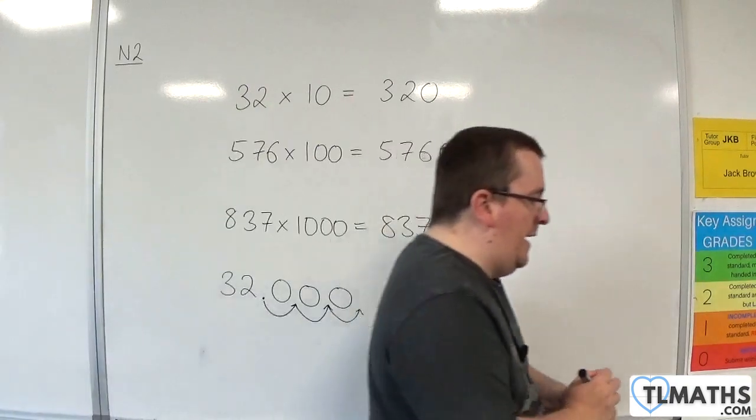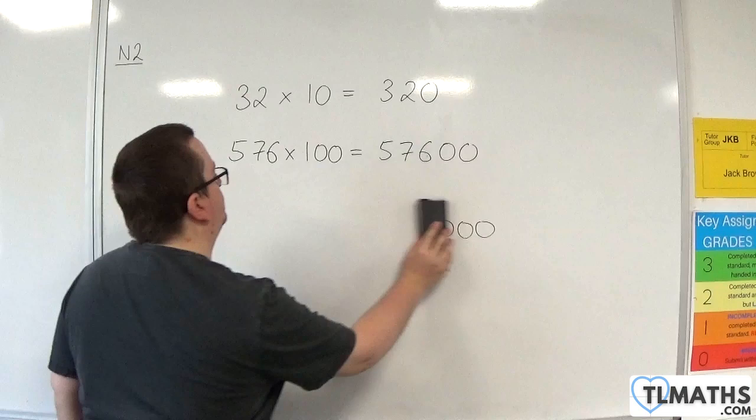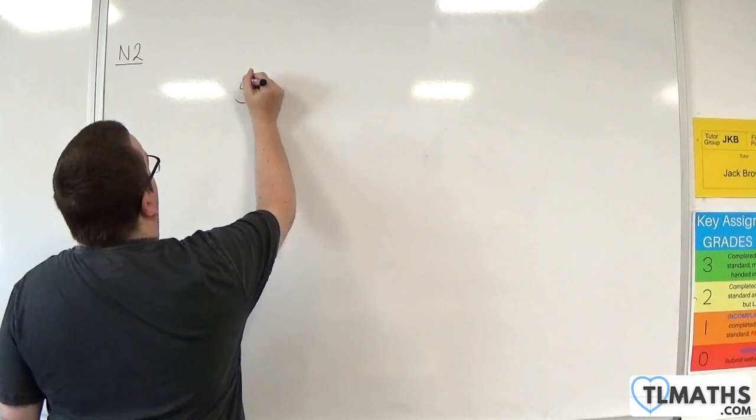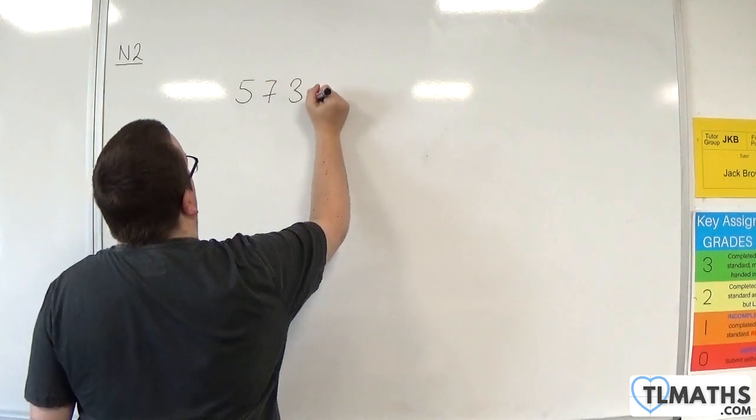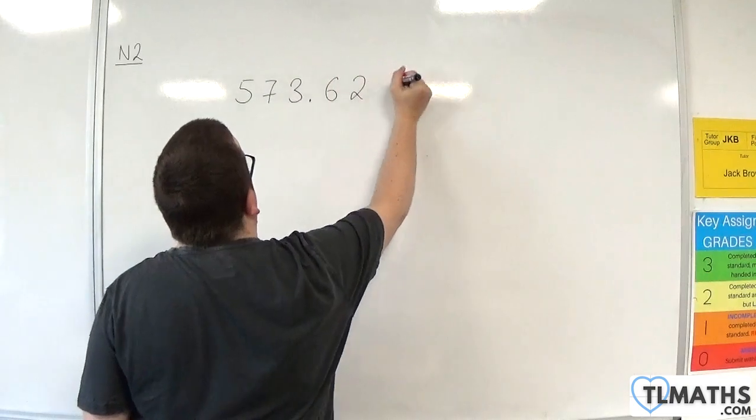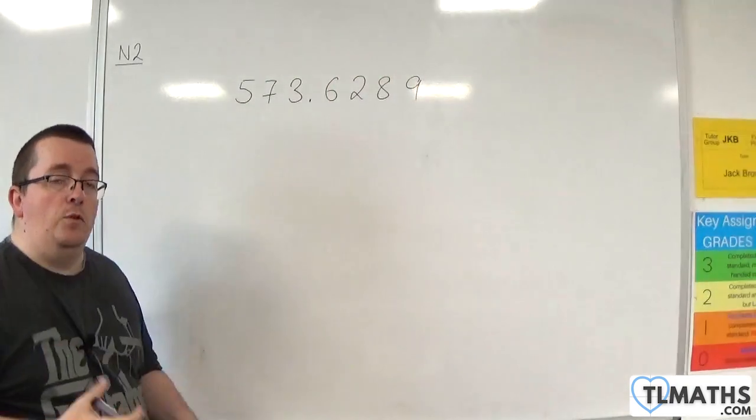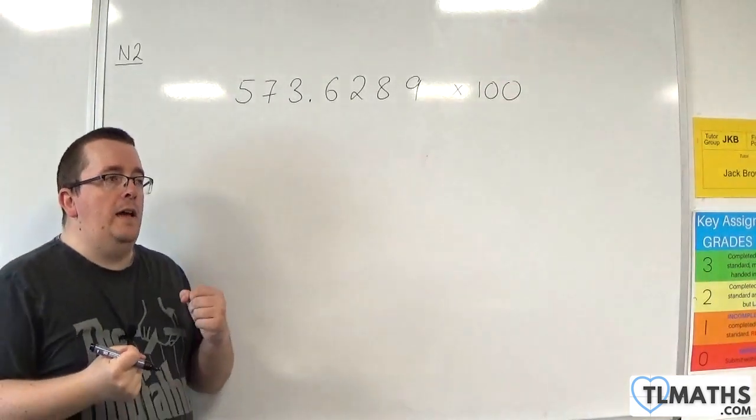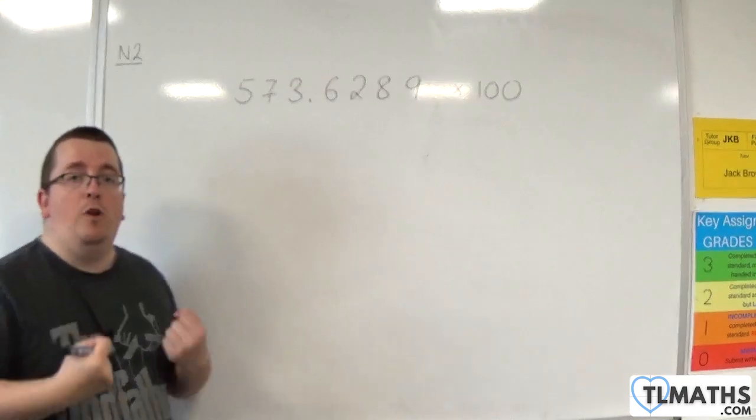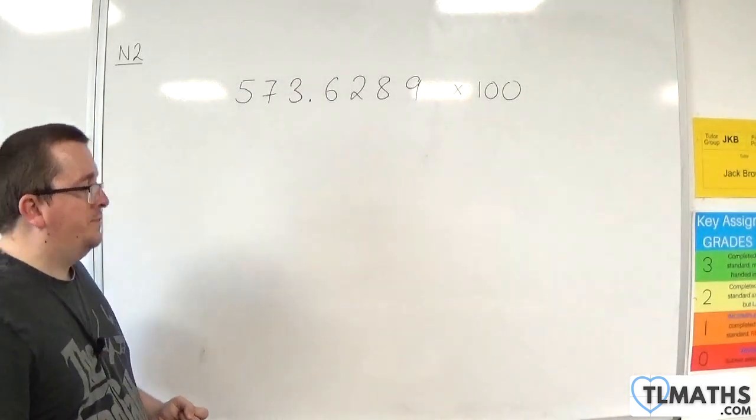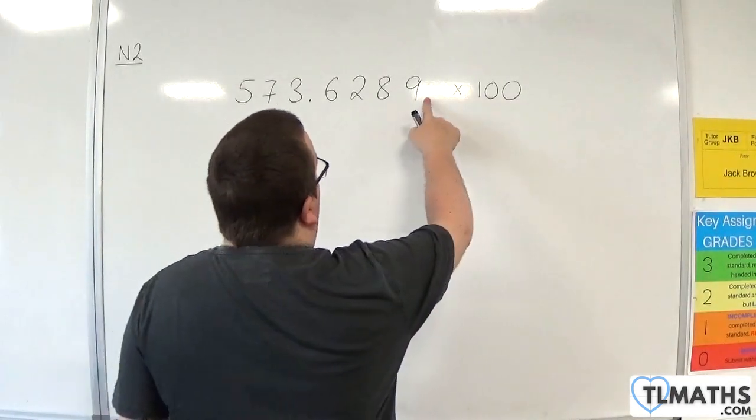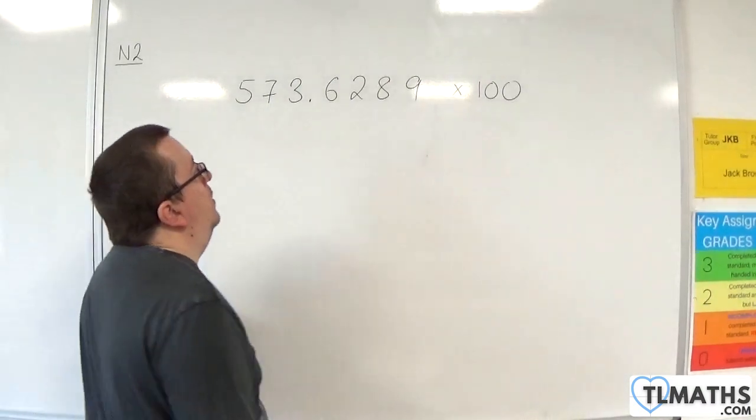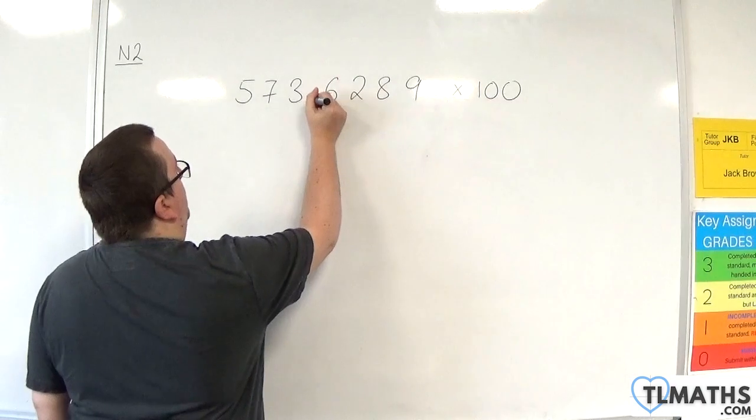If I have something like 573.6289, and I want to multiply that by 100, the idea of sticking two zeros on the end no longer works. I can't do that, because if I just stuck two zeros on the end, I would just be writing down precisely the same number. So the idea is that the decimal point needs to move.